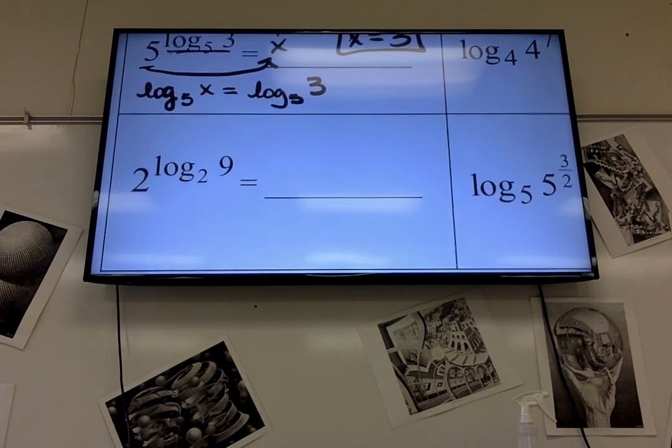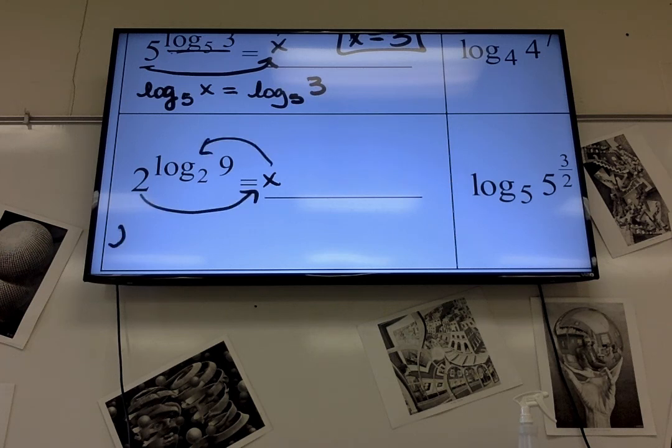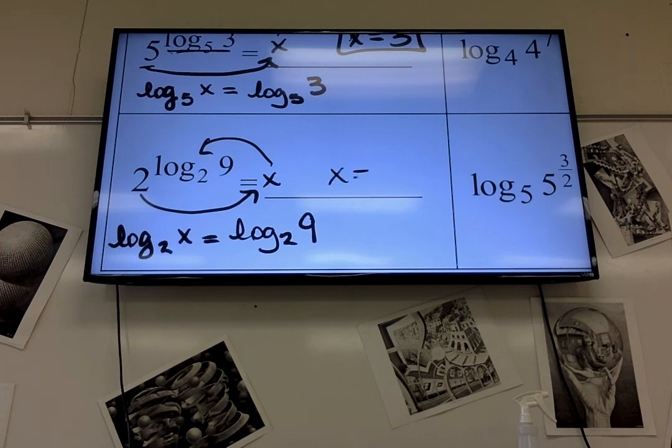We'll go to the one right below it. If I set this equal to x, I'm going to do the circle method. Log. What's my base? Yep, the little number two of x, the one at the very end, equals what's in the middle, the exponent. So what's x? Let's see.